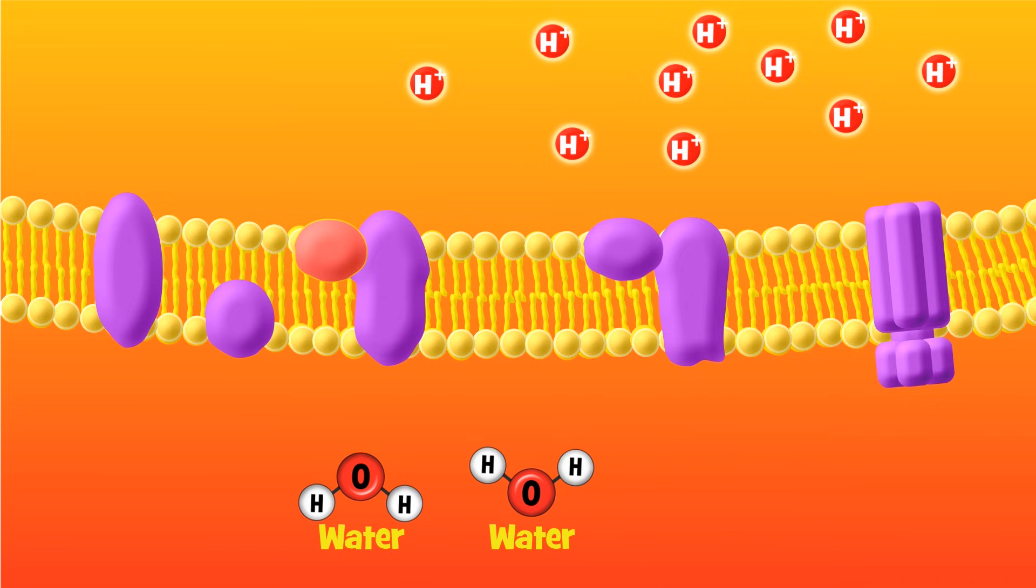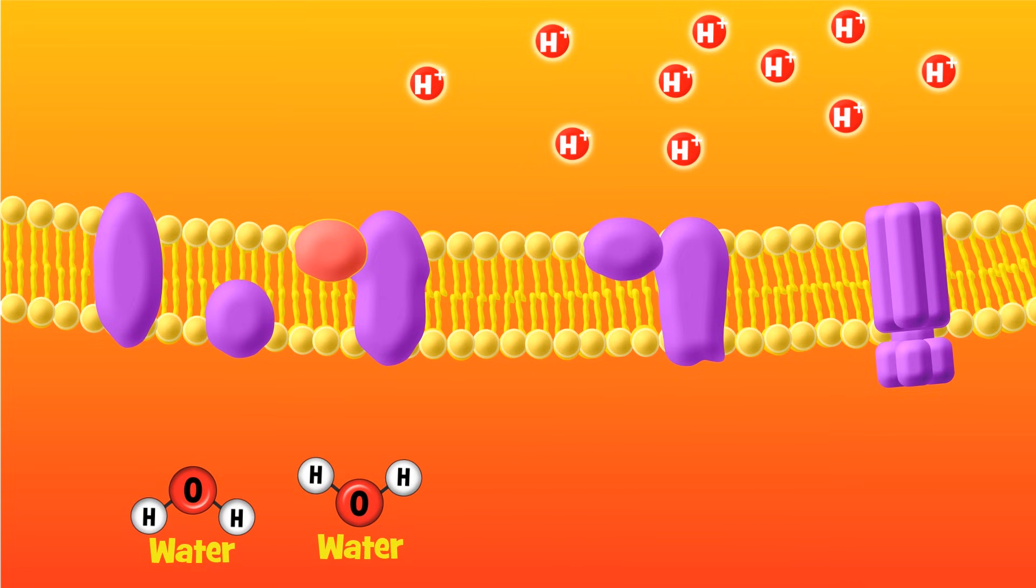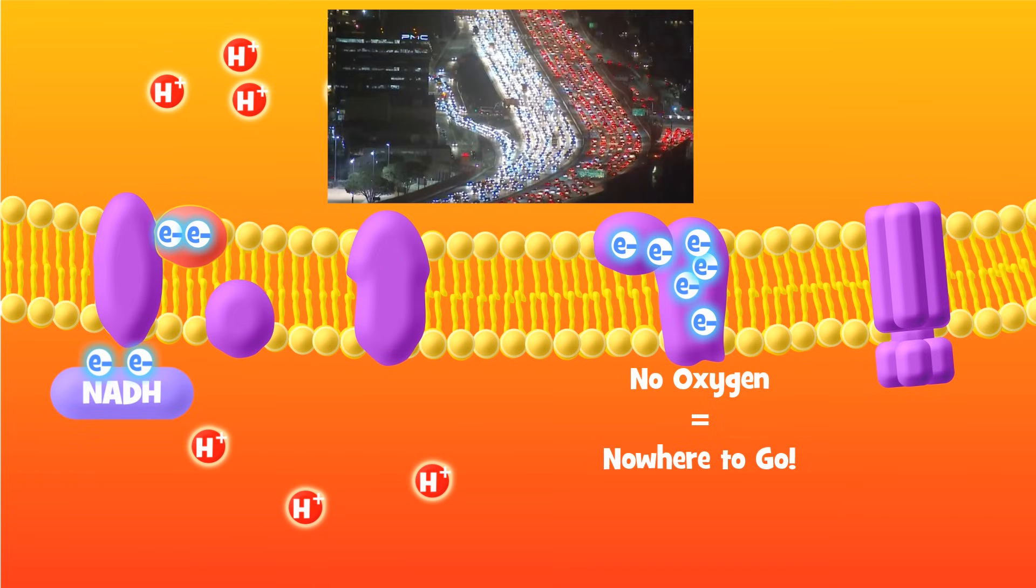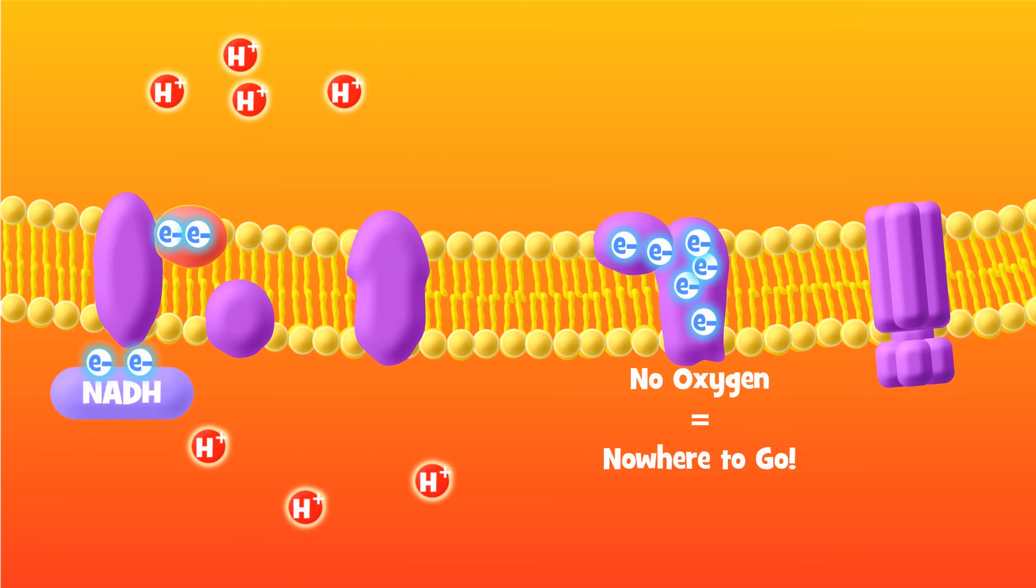Your cells need oxygen to accept these electrons, or the electron transport chain will grind to a halt, like an LA freeway during rush hour. And if the electron transport chain stops, you won't be able to make enough ATP to keep you alive, and you die. So keep breathing that oxygen.